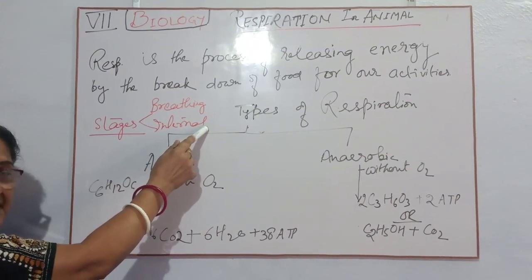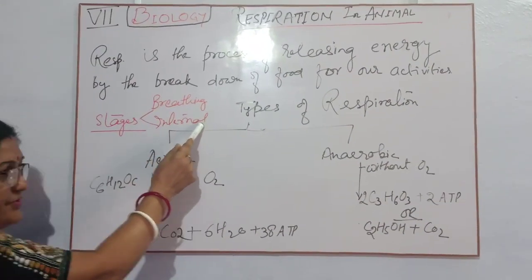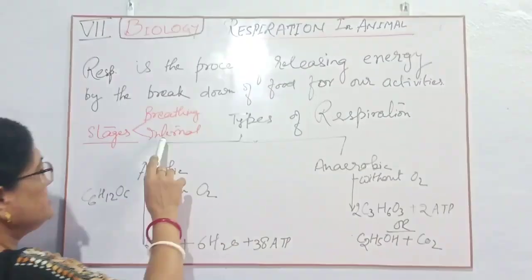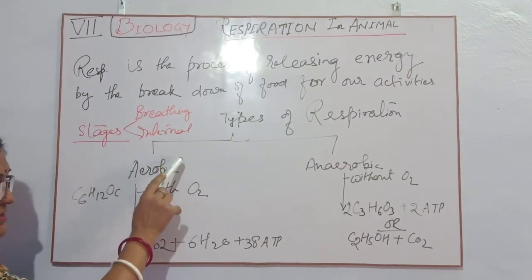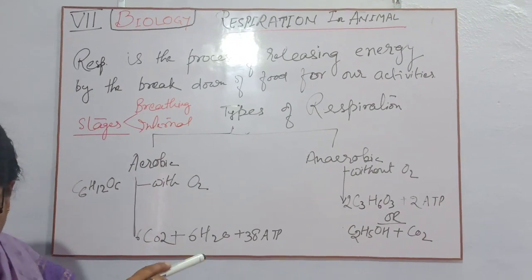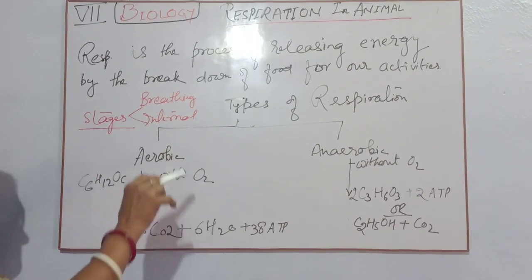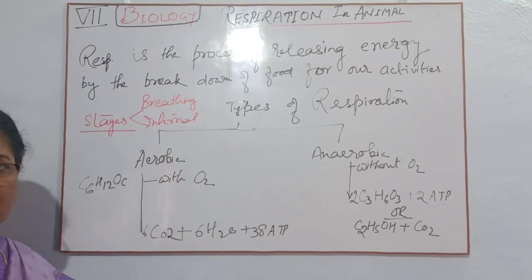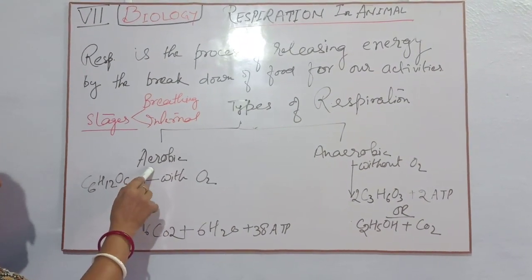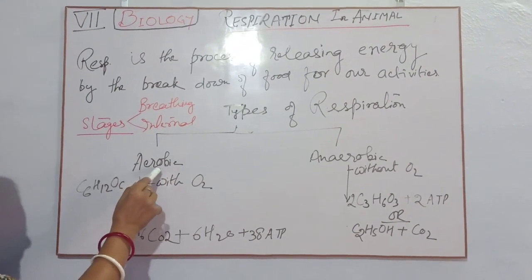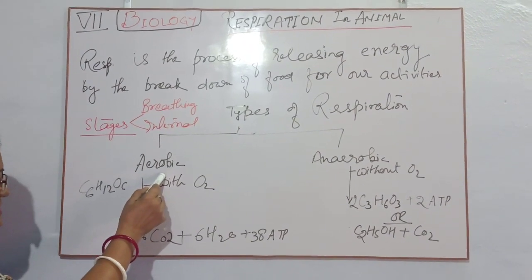Internal respiration occurs in the cytoplasm or in the mitochondria. For internal respiration we need glucose. If glucose burns along with oxygen, then the respiration is said to be aerobic respiration.